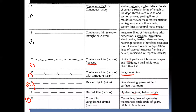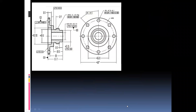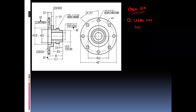The next type is the chain thin long dash dotted narrow line. This type of line is used for the center line, line of symmetry, trajectory, and the pitch circle of gears or holes. You can observe the use of the chain line — it is first used for the center line or symmetry. If any part is symmetrical about a particular axis, we will use such a line.